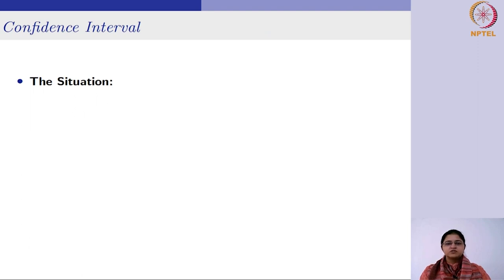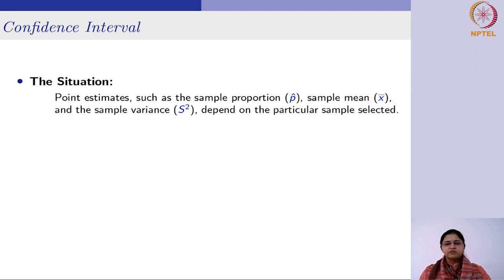The first question that arises is: why do we need confidence intervals? We have already studied point estimation and know how to estimate population parameters. The reason is that whatever point estimates you have calculated - sample proportion, sample mean, or sample variance - all these depend upon the particular sample selected. If I change the random sample, these values would vary; even a single observation would make a change in these point estimates.